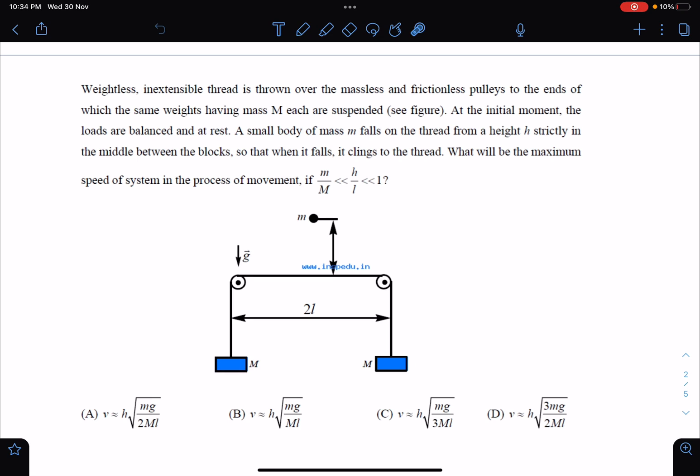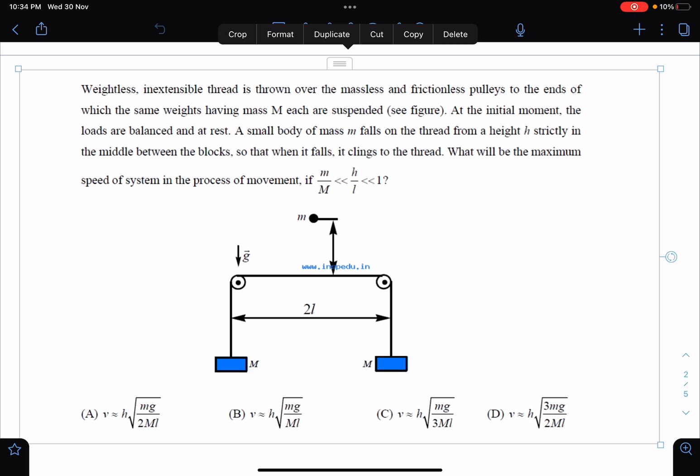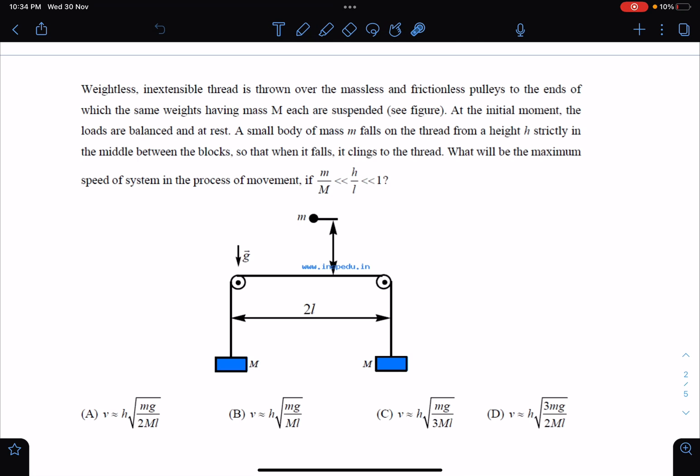What will be the maximum speed of the system in the process of movement if m by M is very very small compared to h by l, and which is very very less compared to unity? I think you're getting a good idea of what kind of approximations we have to use in this problem. These are the four options.